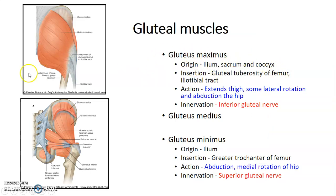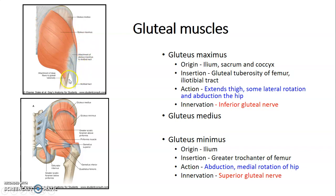Gluteus maximus is the largest muscle. It originates from the ilium, ischium, and coccyx, and inserts onto the gluteal tuberosity of the femur and the iliotibial tract. Its actions are extension of the thigh with some lateral rotation and abduction of the hip. It is innervated by the inferior gluteal nerve.